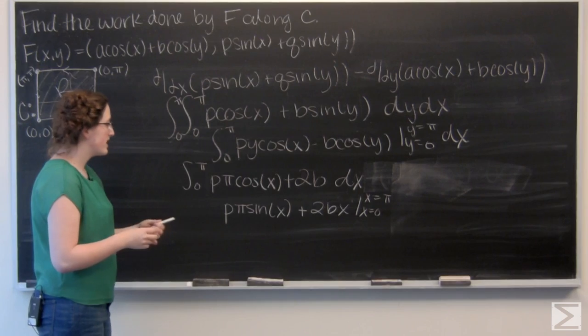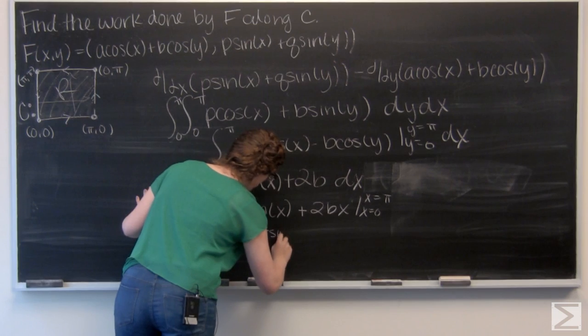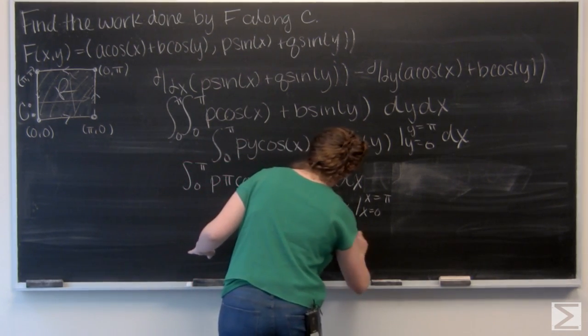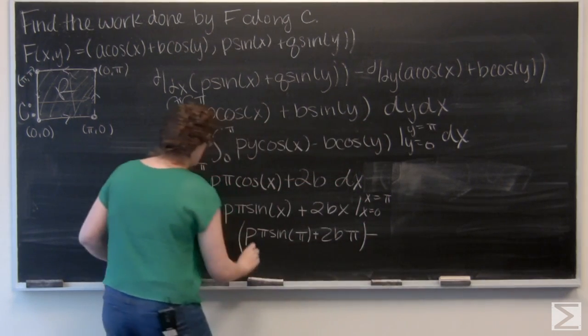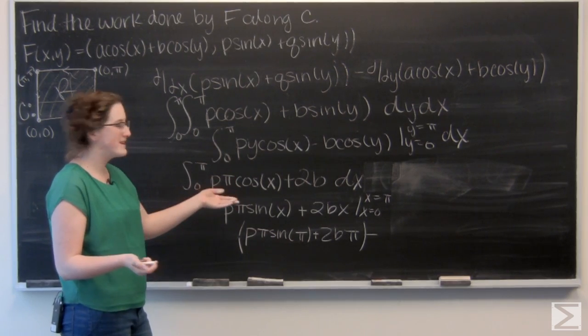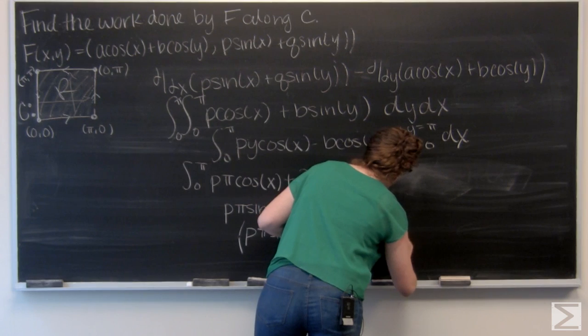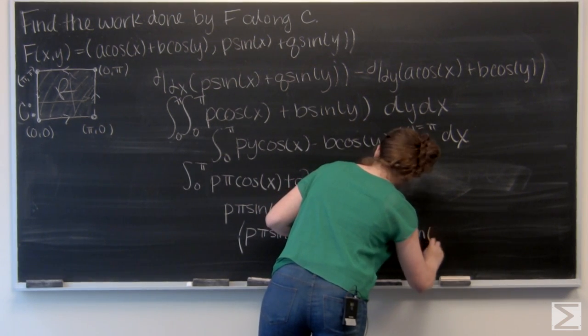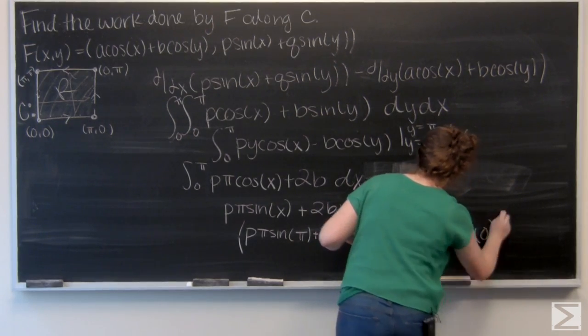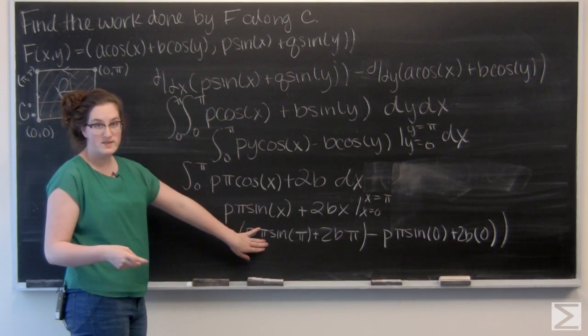And I'm going to evaluate from x equals 0 to x equals π. So let's plug in a π everywhere I see an x. And now that I've got the first term, let's go ahead and plug in everywhere that I see a 0. Plug in a 0 everywhere I see an x.